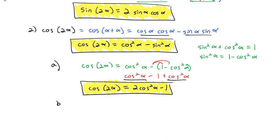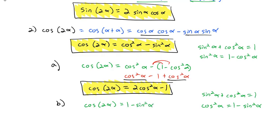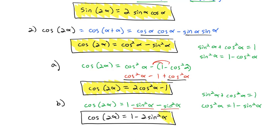We can also solve the Pythagorean identity for cosine squared, giving cosine squared equals 1 minus sine squared. Substituting into the original formula gives cosine of 2 alpha equals 1 minus sine squared alpha minus another sine squared. Combining like terms yields a third form: cosine of 2 alpha equals 1 minus 2 sine squared alpha. So there are actually three different versions of the cosine double angle formula, and you should be able to use any of them depending on the situation.